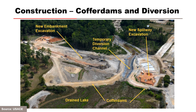The cofferdam and diversion plan was a two-phase approach. Phase one involved constructing cofferdams to protect embankment construction, installing a temporary diversion channel, and placing a cofferdam around the new spillway so that inflows would pass through the diversion channel. Phase two involved, once the new spillway was completed, removing the spillway cofferdam, diverting flows through the new spillway, placing a cofferdam across the upstream end of the diversion channel, completing the embankment connection, and then removing the cofferdams.